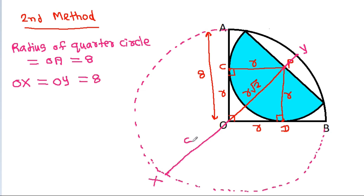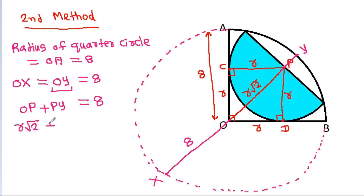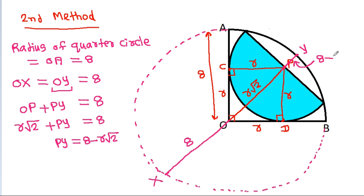OX = 8. And OY = OP + PY = 8. Since OP = R√2, we get PY = 8 − R√2.